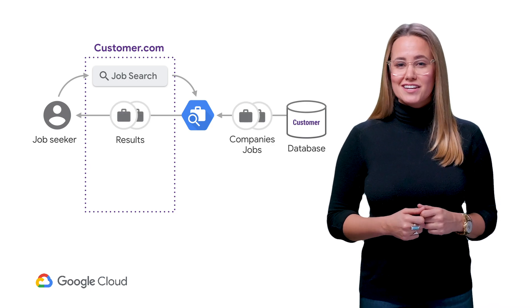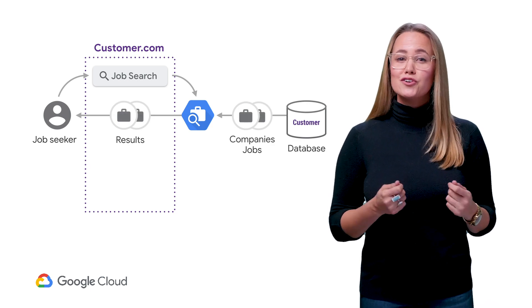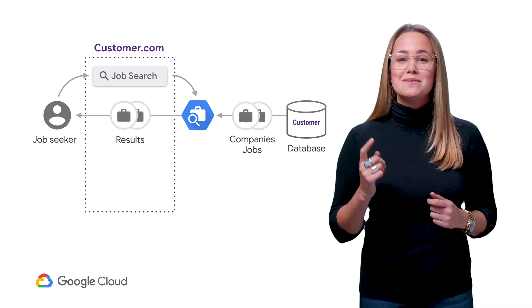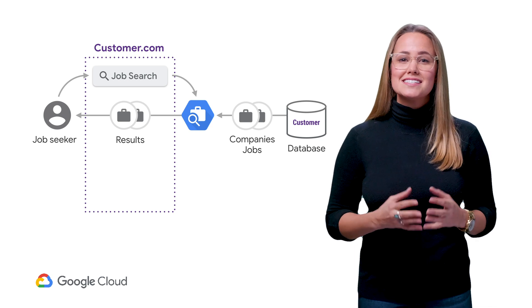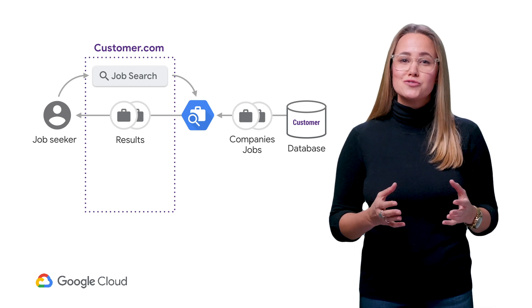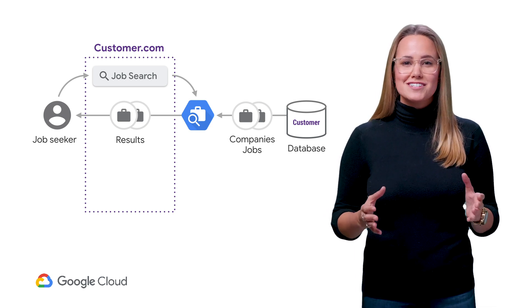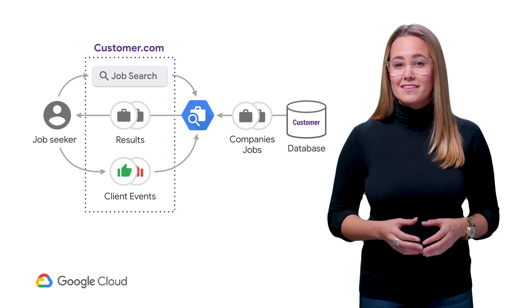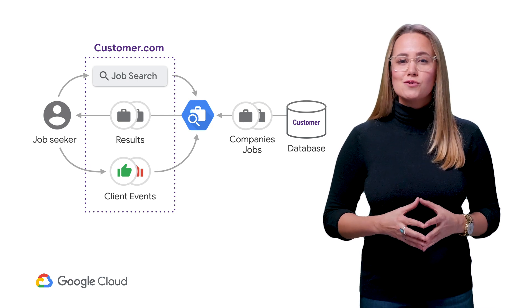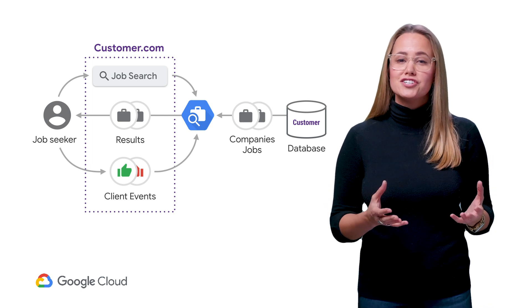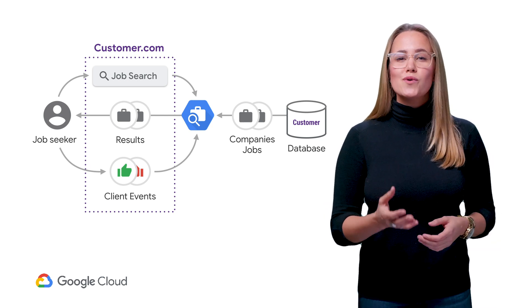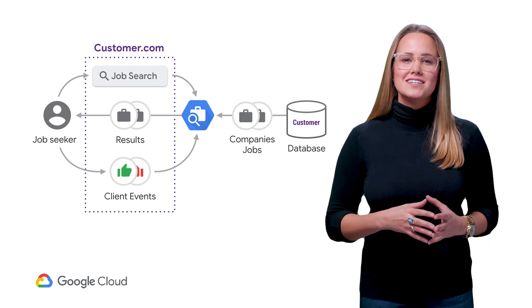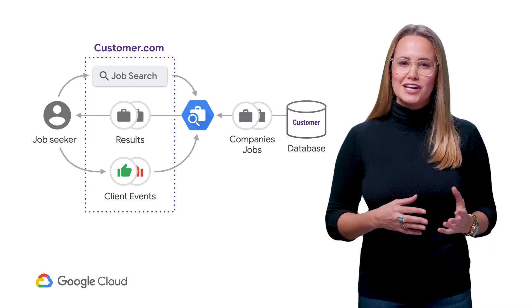Once the API is integrated into your system, your users will see high quality search results immediately. For many businesses, this improvement in search quality is more than sufficient. If you want to further refine the ordering, the API also offers configuration options, as well as the ability to further train the model. We'll talk about these in depth in later videos.